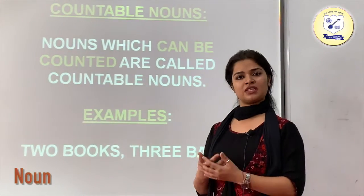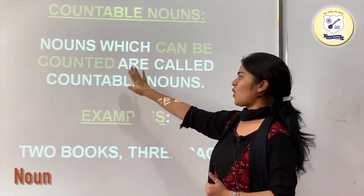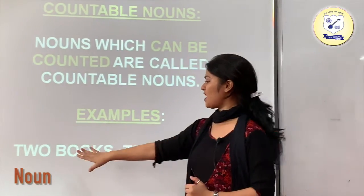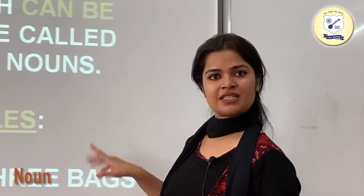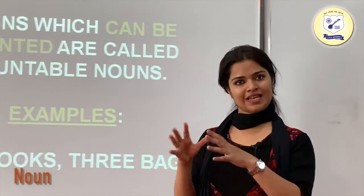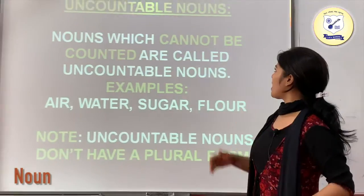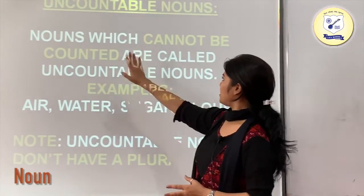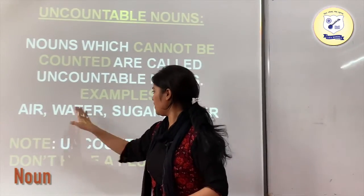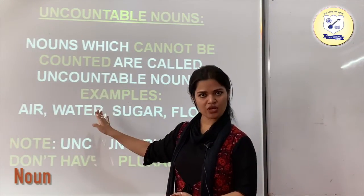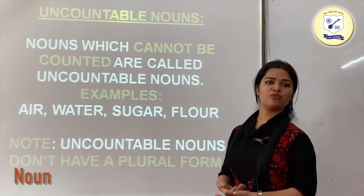Now we have countable nouns. Nouns which can be counted are called countable nouns. For example, two books — you can count one, two — so books is a countable noun. Three bags — one, two, three — things you can easily count are countable nouns. Now uncountable nouns: nouns which we cannot count are called uncountable nouns. Examples: air, water, sugar, flour. Uncountable nouns do not have a plural form.